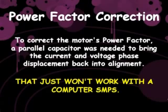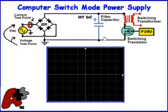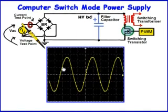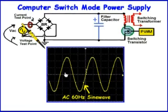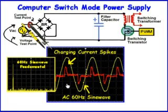That just won't work with a computer switch mode power supply. Here's the input bridge rectifier and filter capacitor to a switch mode power supply. This circuit converts the residential AC into a high voltage DC that serves as operating voltage for the switching transistor. It's this bridge rectifier and filter capacitor circuit that causes the low power factor in a computer switch mode power supply. These current spikes are caused by the bridge rectifier when charging the DC filter capacitor. This is what produces the harmonic currents.